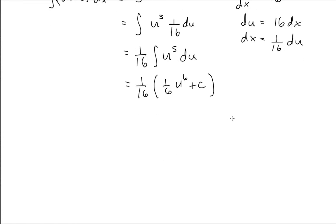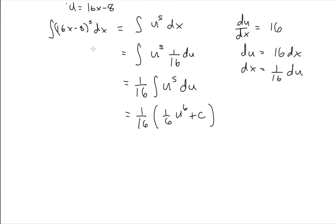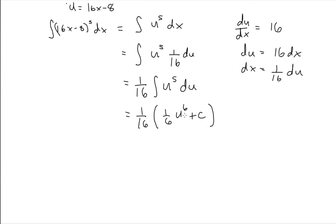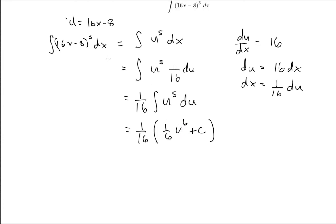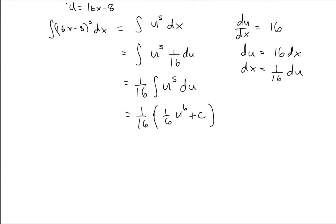Because they gave us the question in terms of x, I should turn everything back into x. I look up and see what u was standing in for—it was 16x minus 8. So wherever I see a u, I'll put it back in terms of x. This becomes 1 sixth times 16x minus 8 to the power of 6 plus a constant.